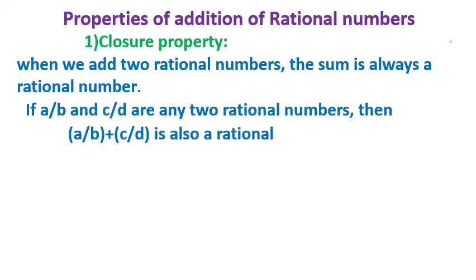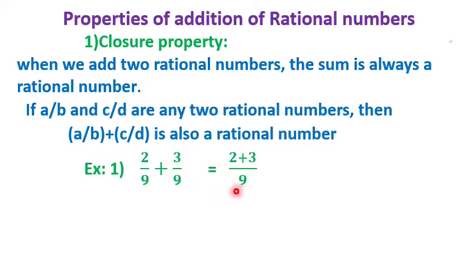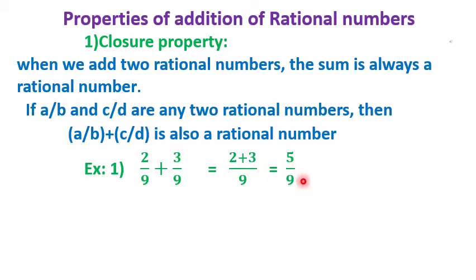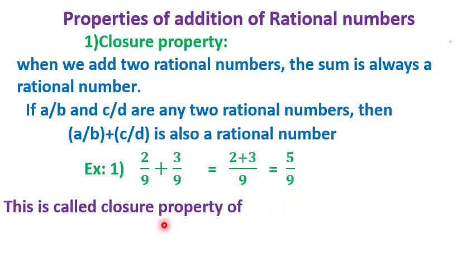For example, 2/9 plus 3/9. Here both the denominators are the same, so we can do simple addition: 2 plus 3 over 9 is equal to 5/9. If the denominator is the same, we keep it and just add the numerators. So the answer is 5/9, which is a rational number.